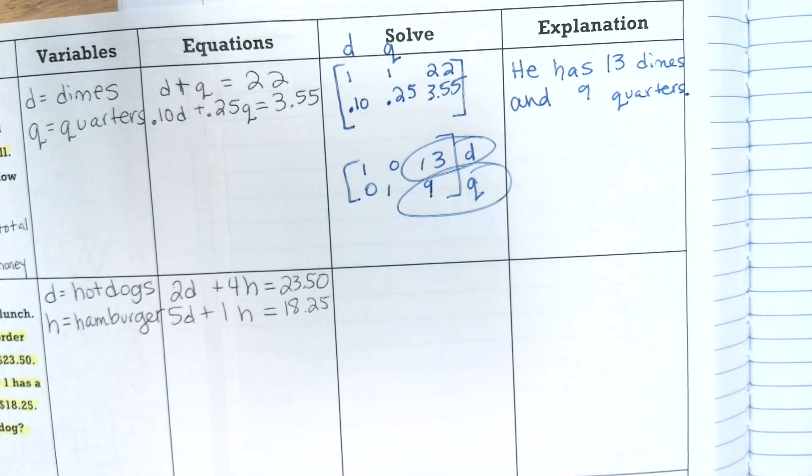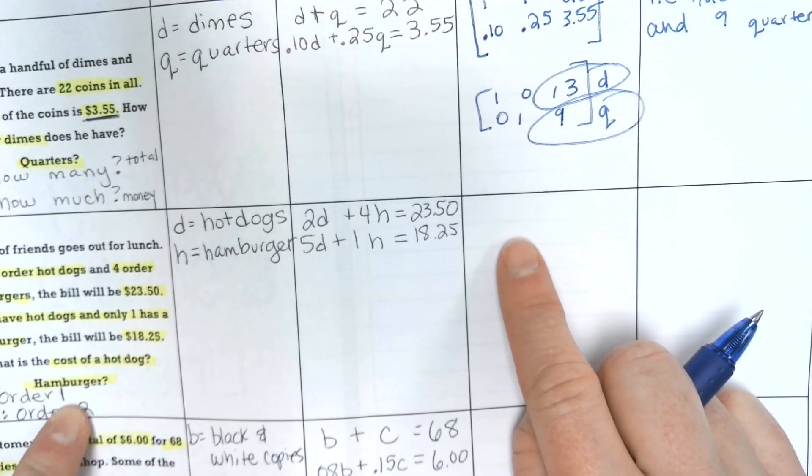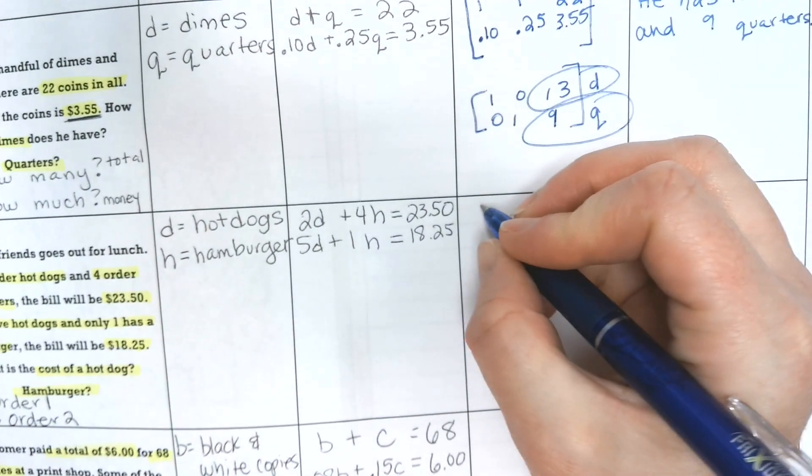Okay. So let's do the next one. So this was all about hamburgers and hot dogs. And we are wanting to know the cost of a hot dog and the cost of a hamburger. So this was order 1, order 2. So let's write our matrix.